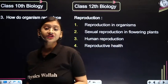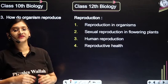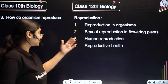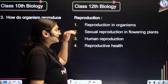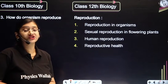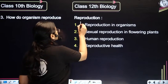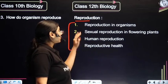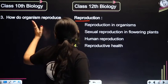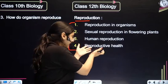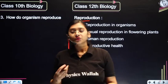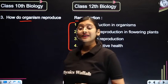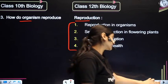The third chapter is How Do Organisms Reproduce? In 12th standard biology, the first unit is Reproduction, which has a set of important chapters. The class 10th chapter gives an introduction and outline of all these chapters that come under the Reproduction unit in 12th standard.